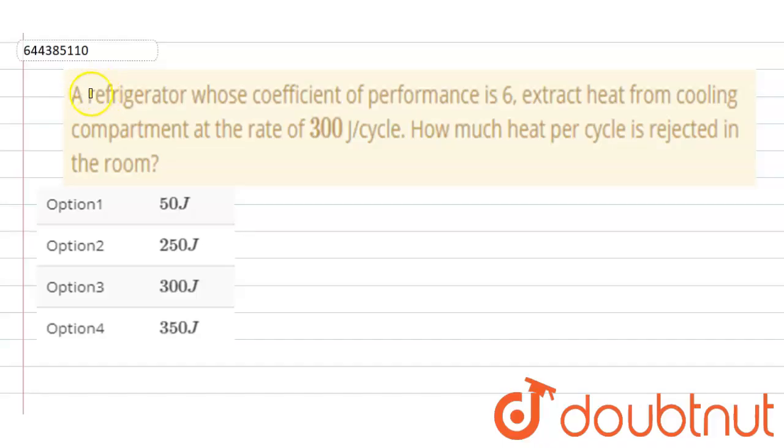Hello student, so the question is: a refrigerator whose coefficient of performance is 6 extract heat from cooling compartment at the rate of 300 joule per cycle. How much heat per cycle is rejected in the room?